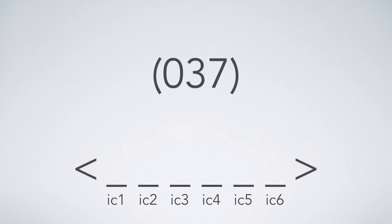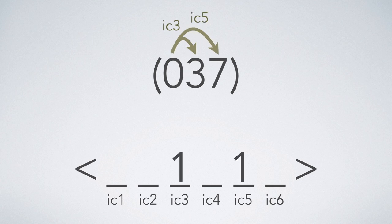To see how this works, let's consider set class 0, 3, 7, which is the set class of major and minor triads. We can determine how many of each interval class this set class contains by checking every intervallic relationship in the set. 0 to 3 is 3 semitones, and 0 to 7 is 7 semitones, which, you should recall, is the inversion of 5 semitones and thus falls in with IC5. These are the easy interval classes to spot.